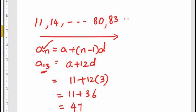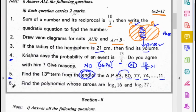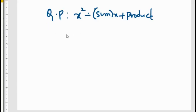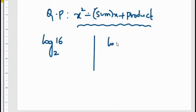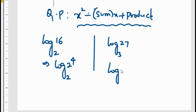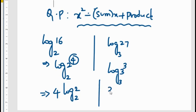Sixth question: find the polynomial whose zeros are log 16 base 2 and log 27 base 3. To find the quadratic polynomial, we use the formula x squared minus (sum of zeros) into x plus (product of zeros). The two zeros are found from the given conditions. Log 16 can be expressed as log 2 to the power 4, base 2, and log 27 as log 3 cubed, base 3. Using the formula log A to the power M equals M log A, this becomes 4 log 2 base 2 and 3 log 3 base 3.